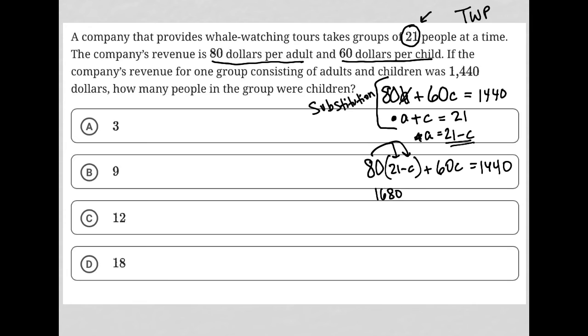80 times negative C becomes minus 80C plus 60C equals 1440. This becomes 1680. So negative 80C plus 60C is negative 20C. Minus 20C equals 1440.